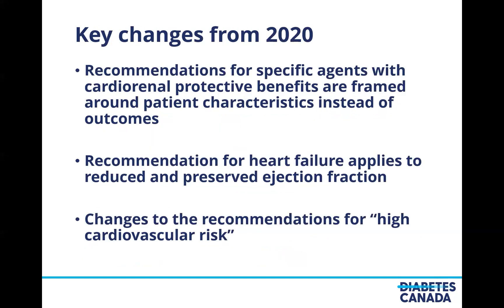This slide shows the key changes from the 2020 update to the 2024 update. First, recommendations for specific agents with cardiorenal protective benefits are now framed around patient characteristics instead of patient outcomes, as they were in 2020. Clinicians ask what to use for a patient with chronic kidney disease, not what to use to prevent a specific outcome. We also changed the heart failure recommendation to apply for both preserved and reduced ejection fraction, reflecting the evolution of evidence since 2020. Finally, we changed the recommendation for patients at high cardiovascular risk, which I'll discuss in more detail later.